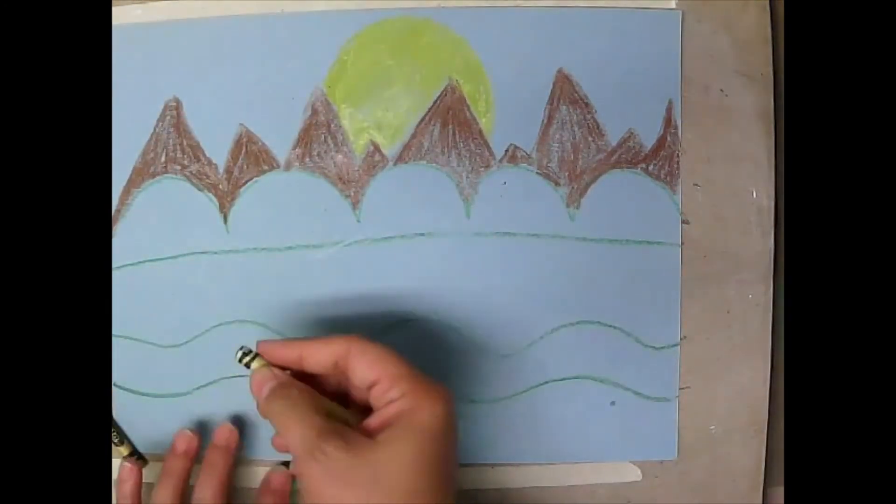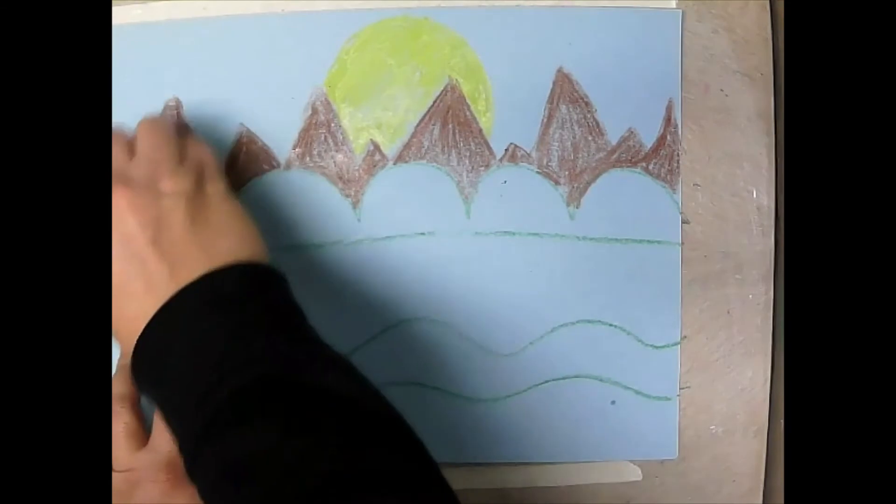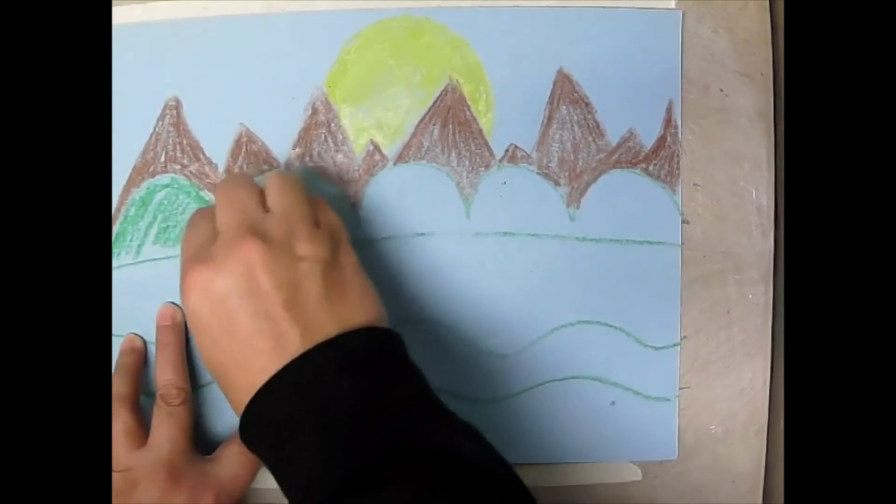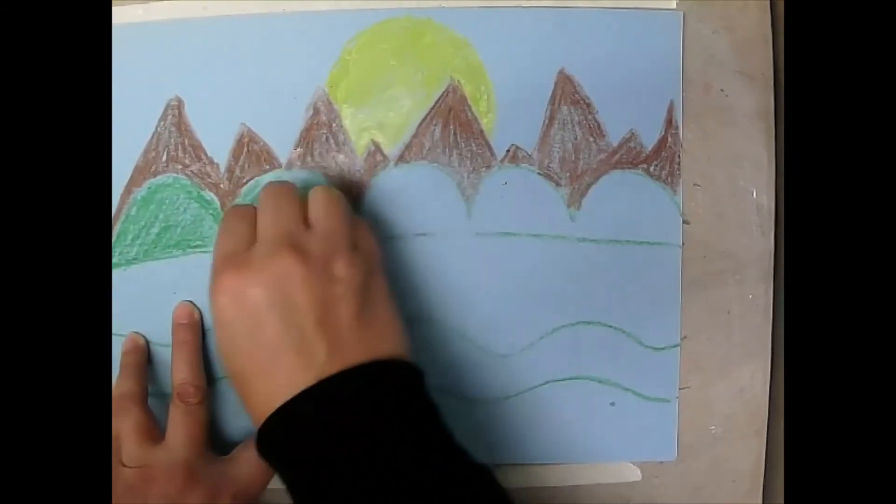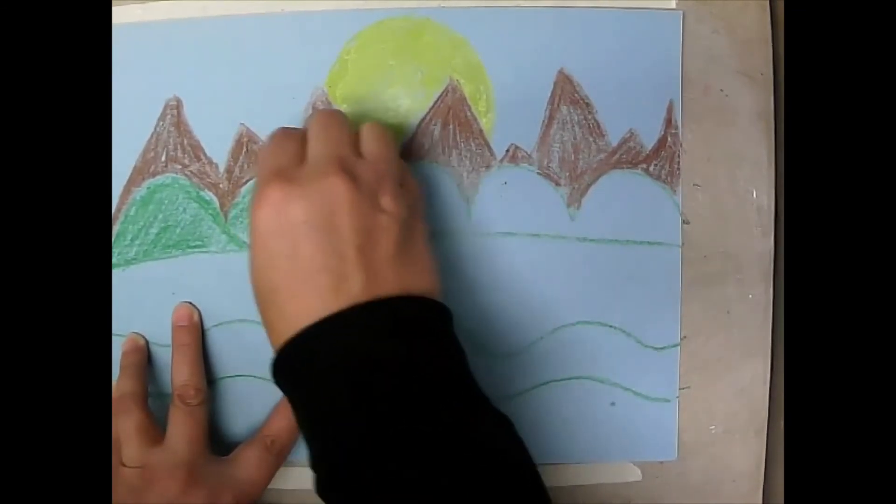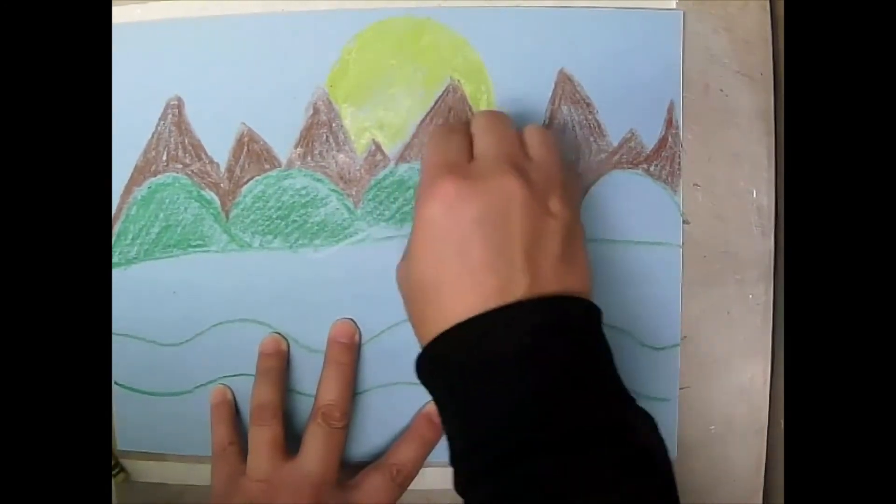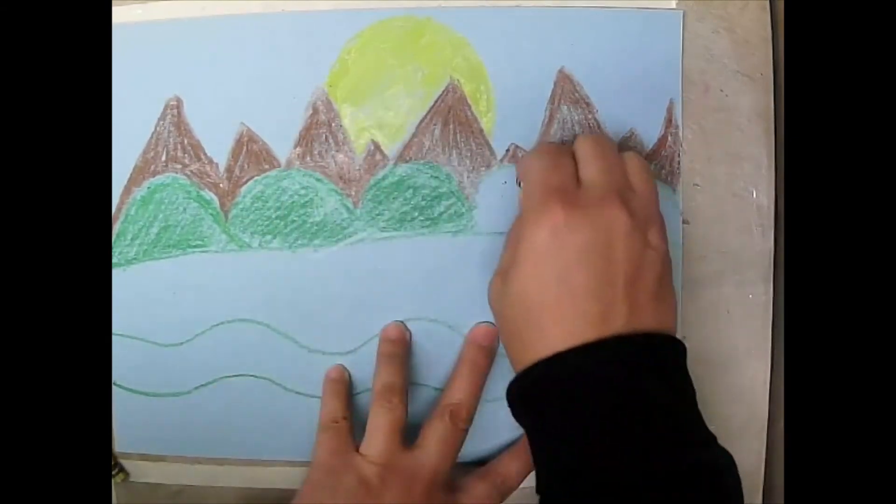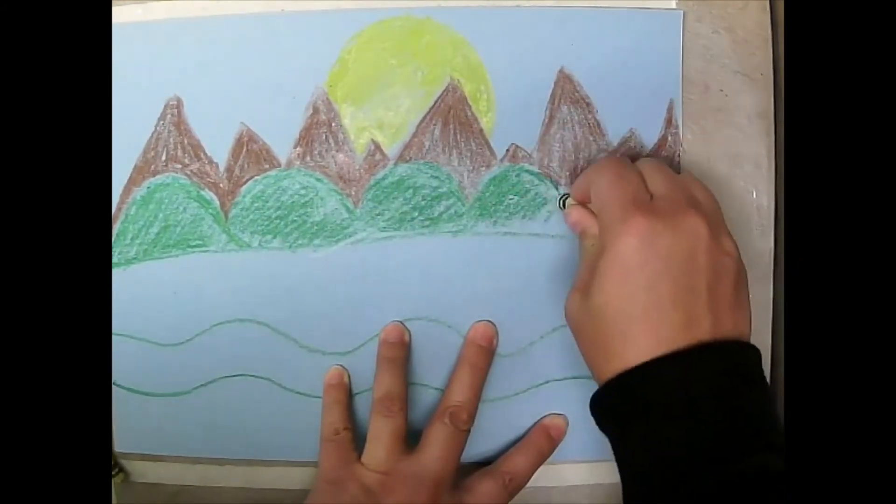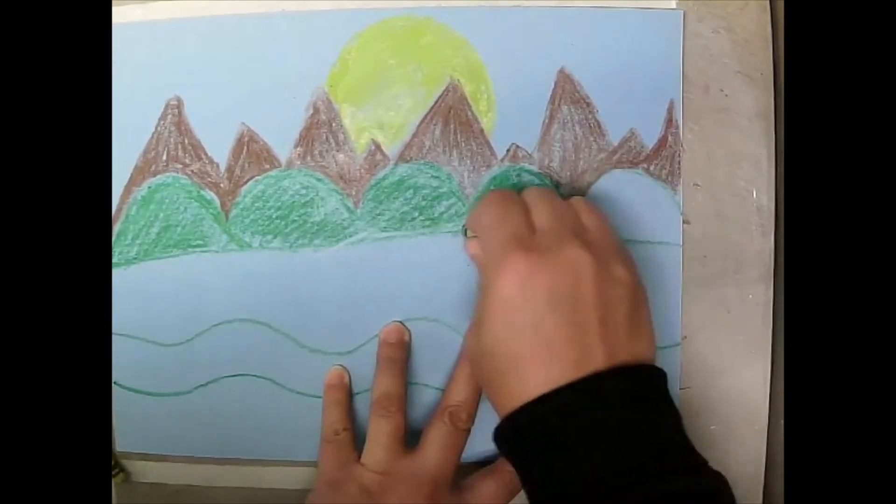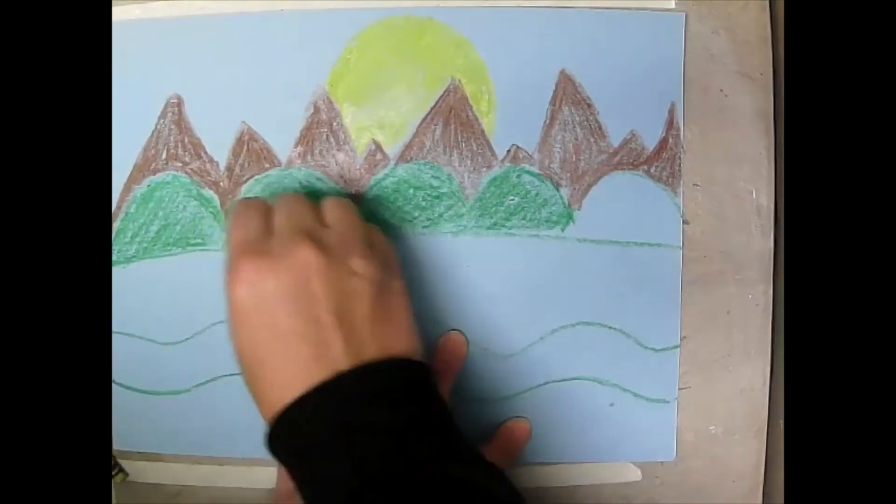Then you're going to color the ground, the mountains, the hills. That's what they are, they're hills, not mountains. The hills are going to be green. I have to try really hard to cover up all that blue so the blue isn't showing through. I am coloring in different directions, but you don't want to go like this. If you start in one direction, you probably want to stay with that. Then if you need to go back another direction to fill in spaces, you can.